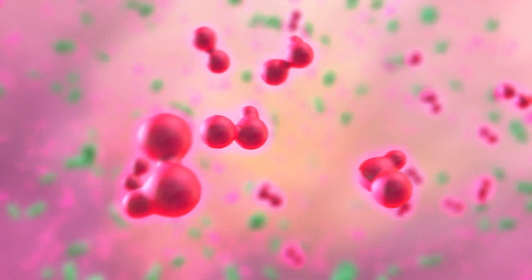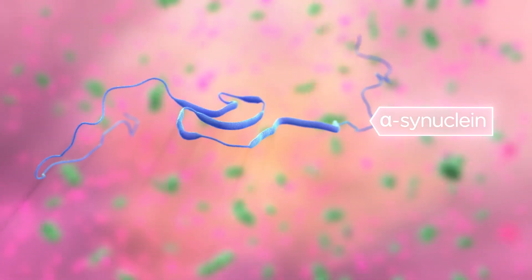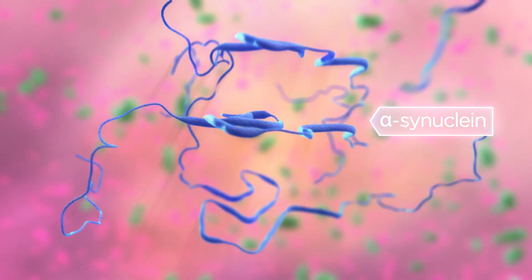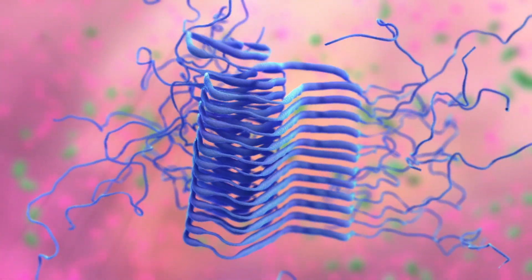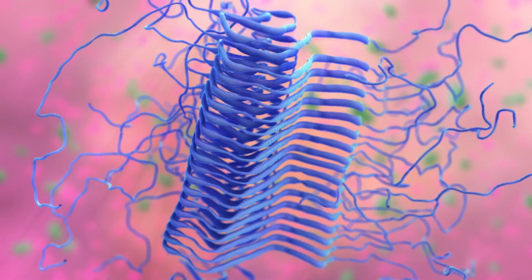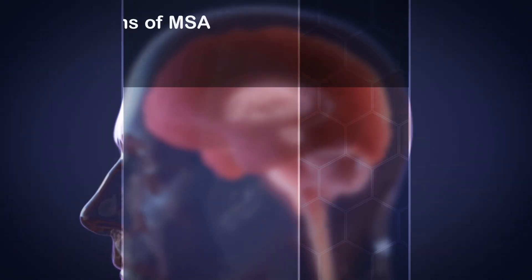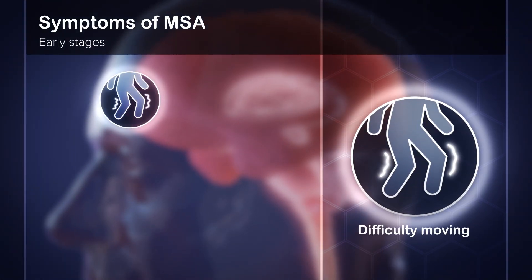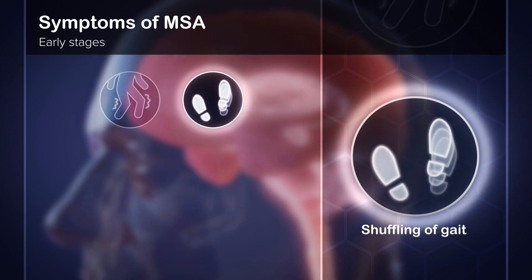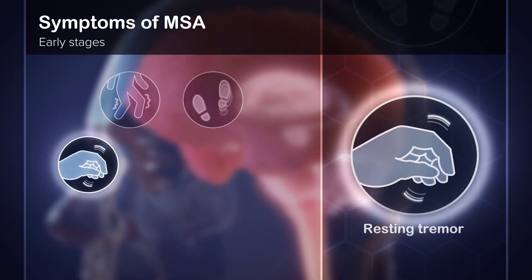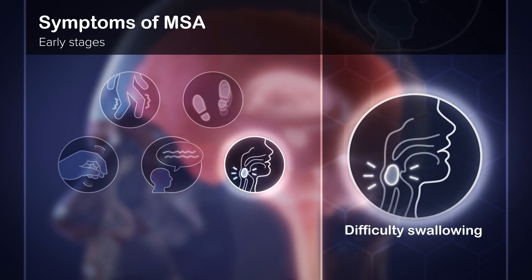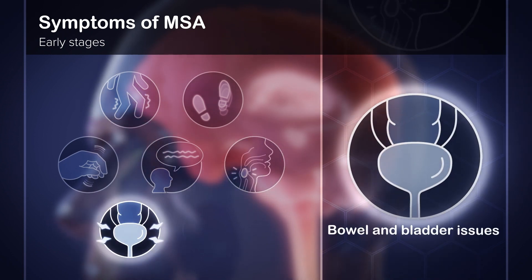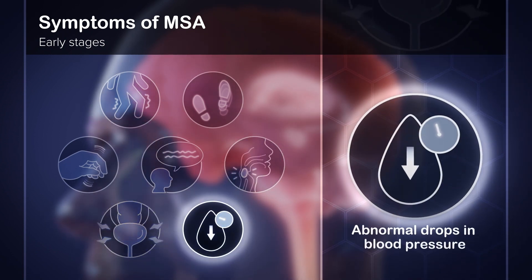Additionally, these highly reactive compounds can promote the aggregation of a protein called alpha-synuclein in the brain. The presence of this protein may be used to confirm the diagnosis of MSA post-mortem. Symptoms in the early stages include difficulty moving, shuffling of gait, resting tremor, slurred speech, difficulty swallowing, bowel and bladder issues, and abnormal drops in blood pressure.